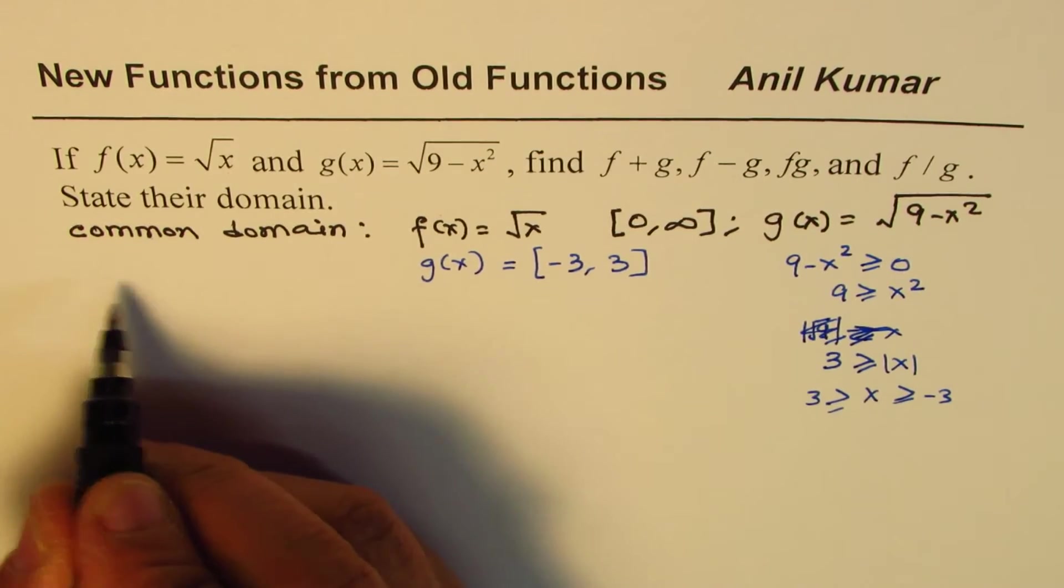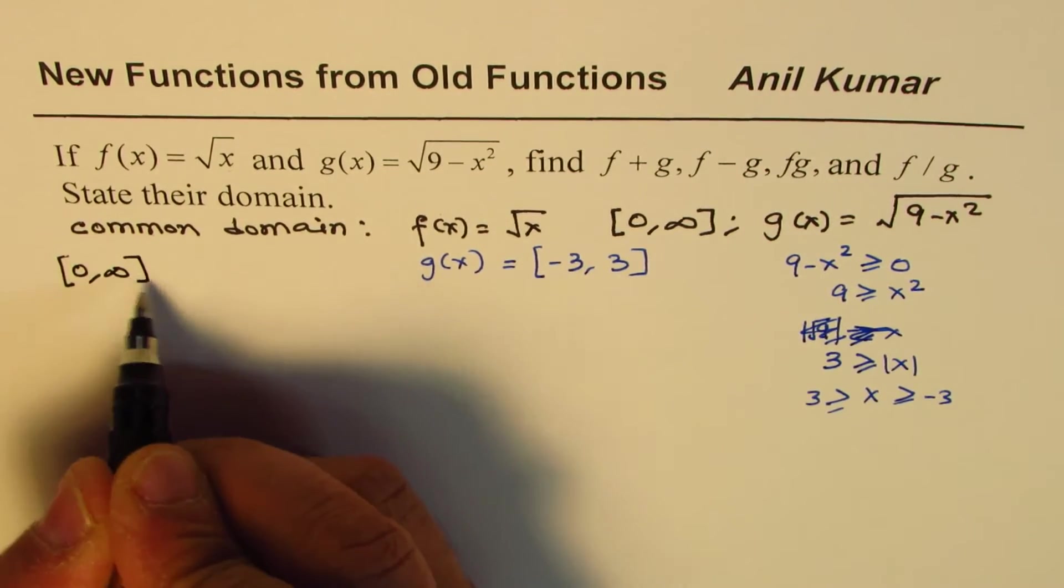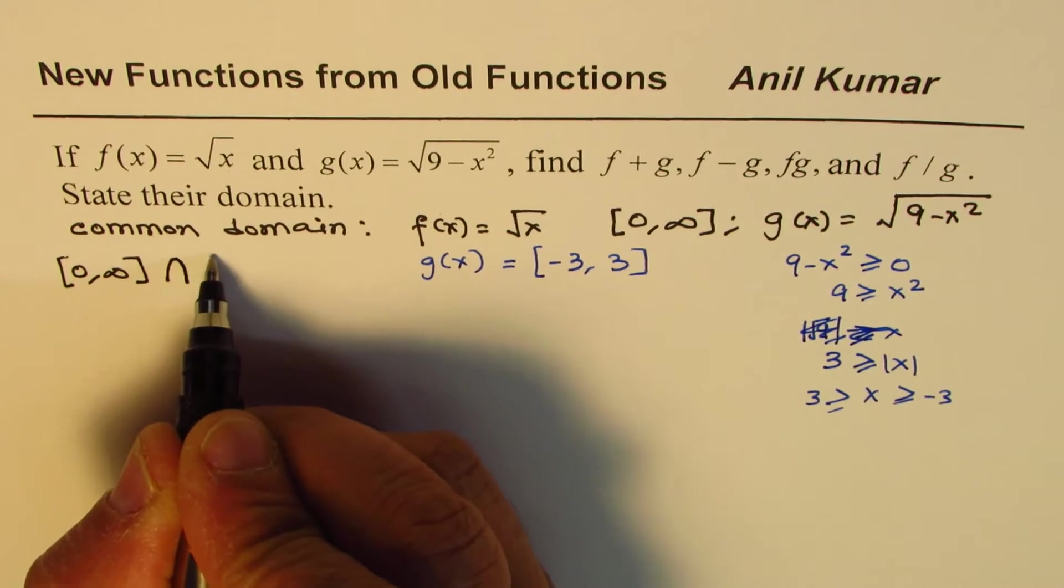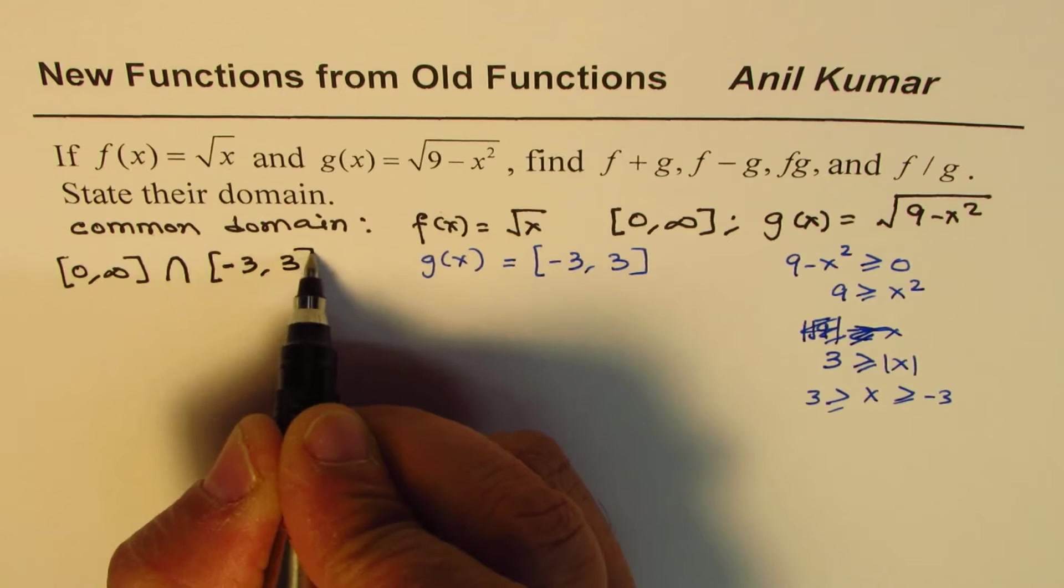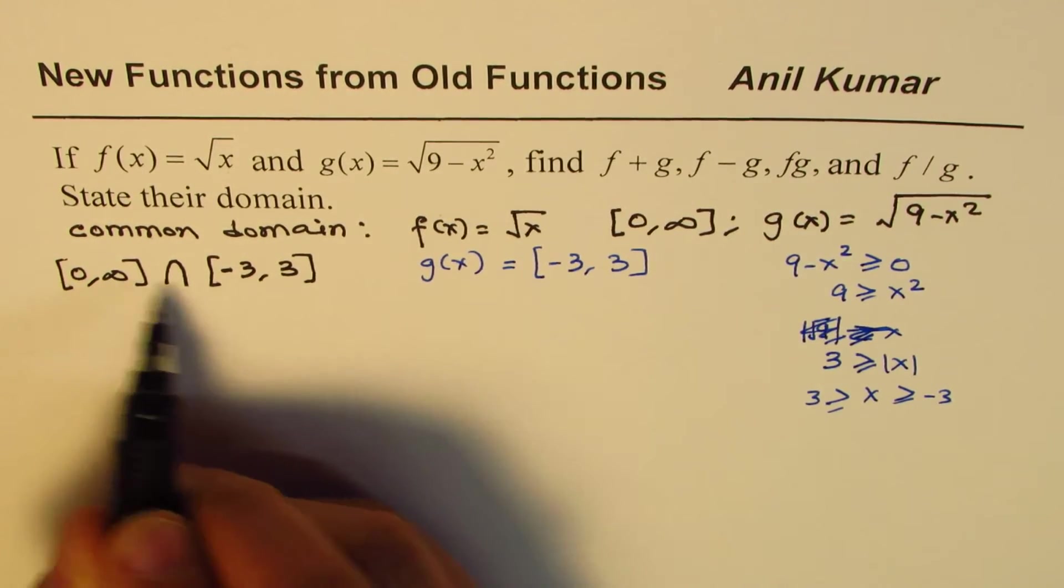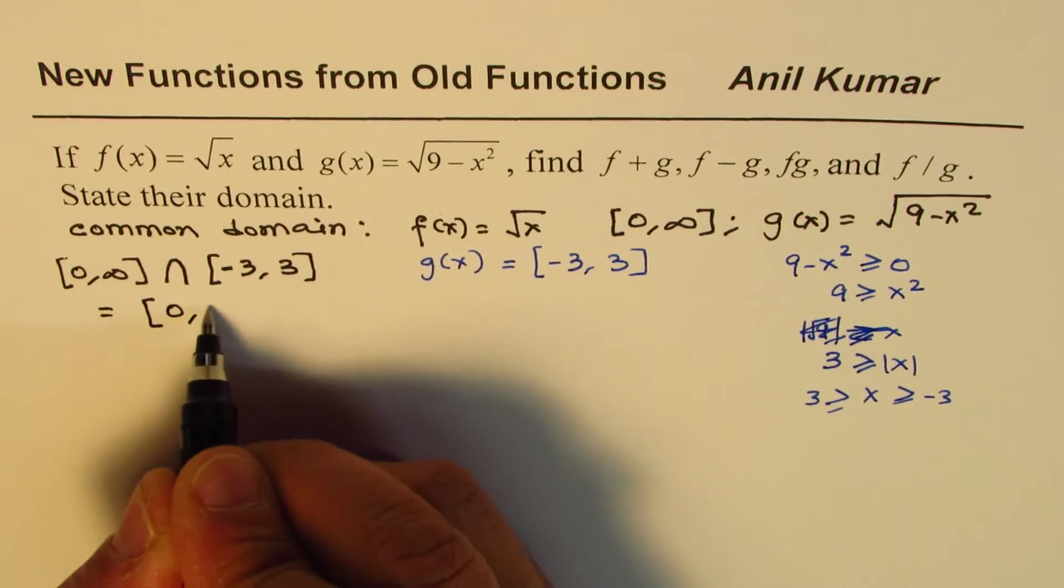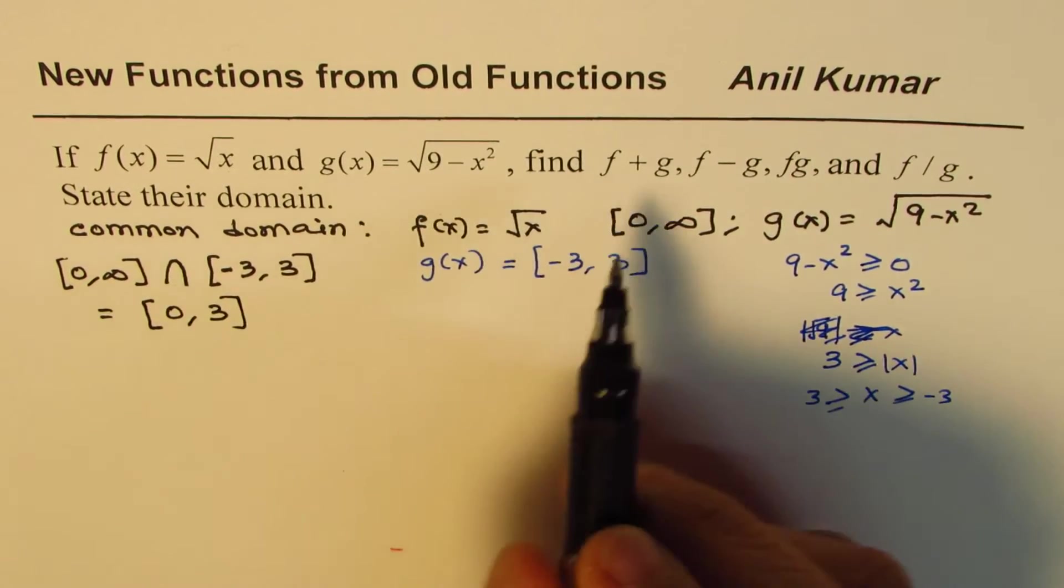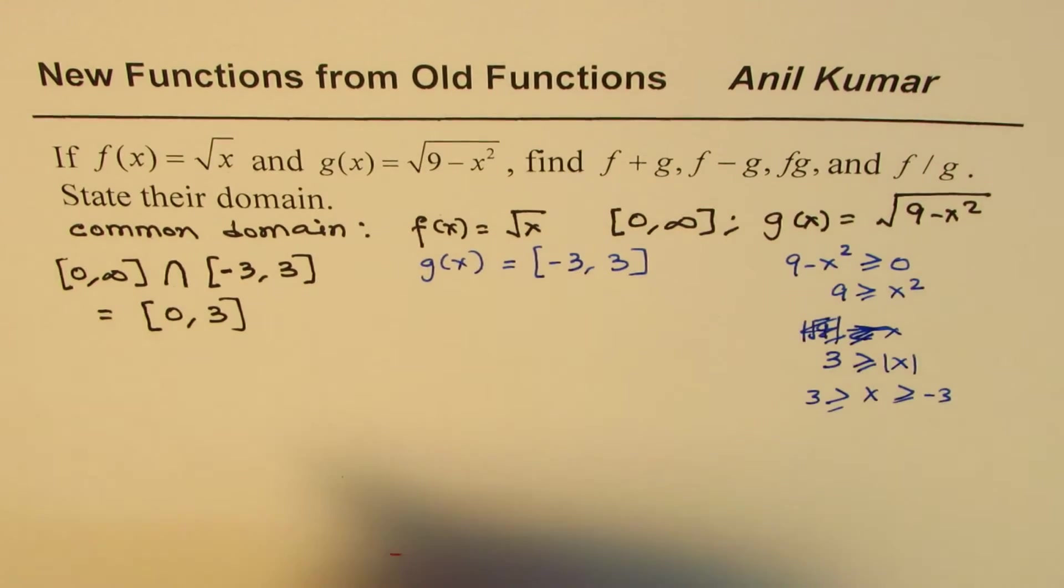So the common domain here is between 0 to infinity intersection from minus 3 to 3, which is clearly from 0 to 3. So that becomes the domain for most of these operations. That is very important to understand. Once we are clear about it, now let's answer each and every question.